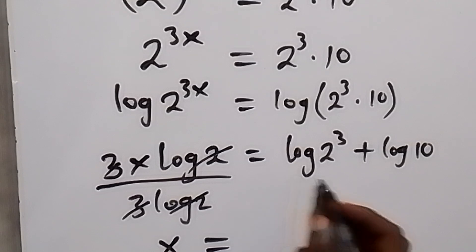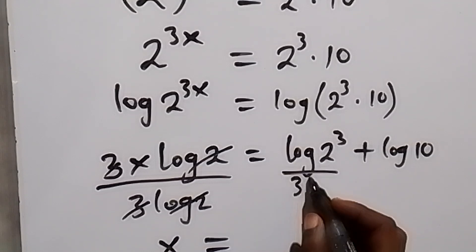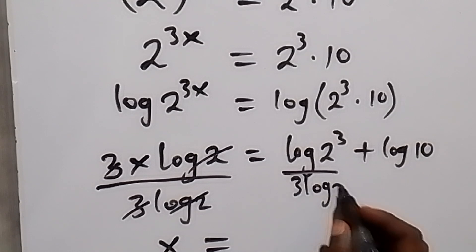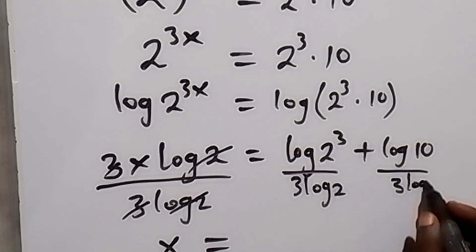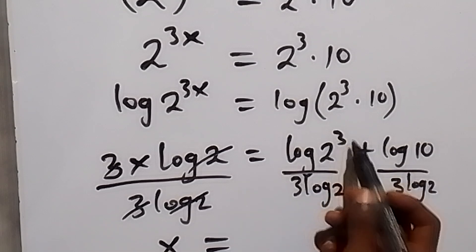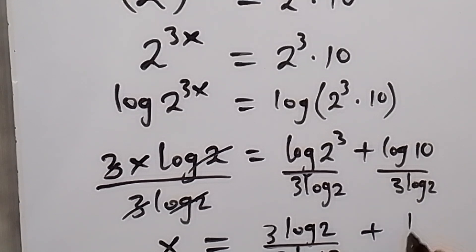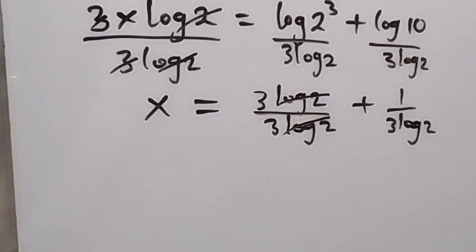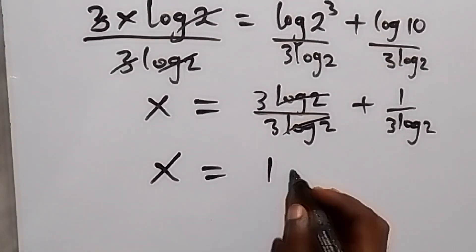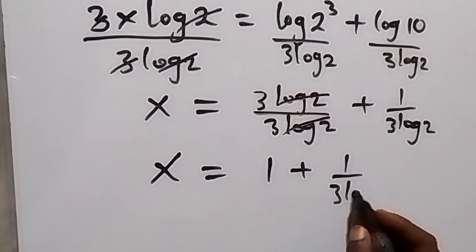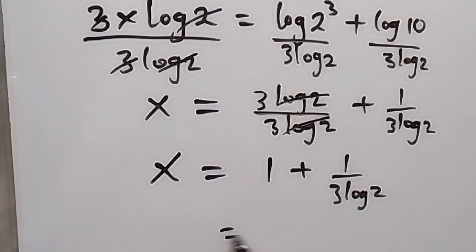Dividing both sides by 3 log 2, the power of 3 comes to the front giving 3 log 2. On the left, 3 log 2 over 3 log 2 cancels to give 1. So x equals 1 plus 1 over 3 log 2, the same form as before.